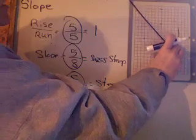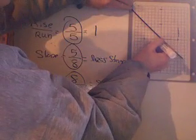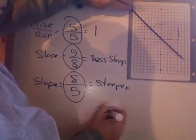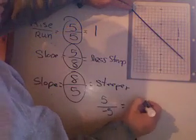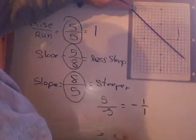And slopes this way would be negative slopes. Let's just count a negative slope. I go from here, one, two, three, four, five. So, my run was negative five. My rise, one, two, three, four, five. My rise was five. So, this is negative one over one. So, negative slopes go in the opposite direction.